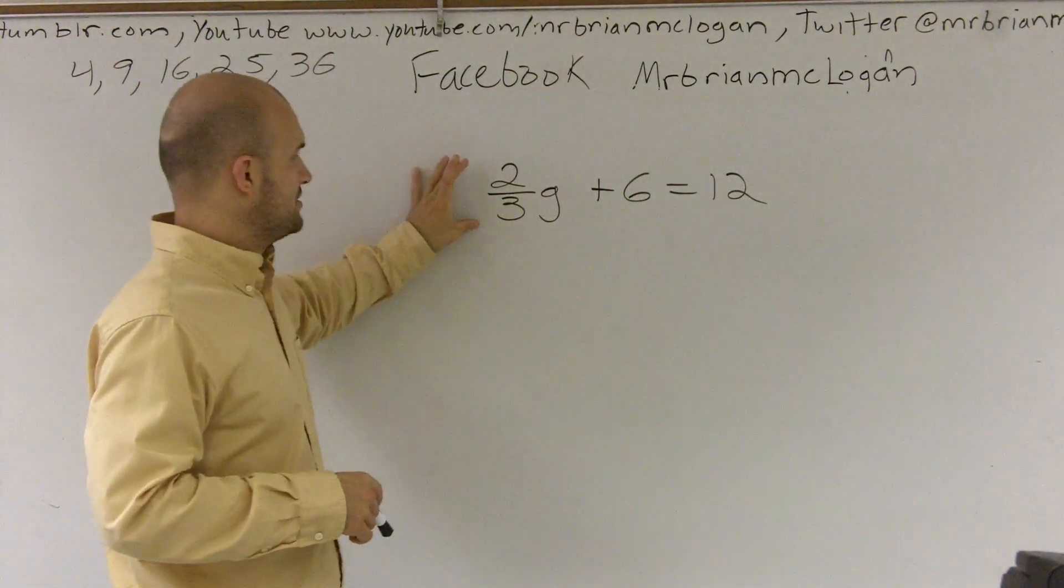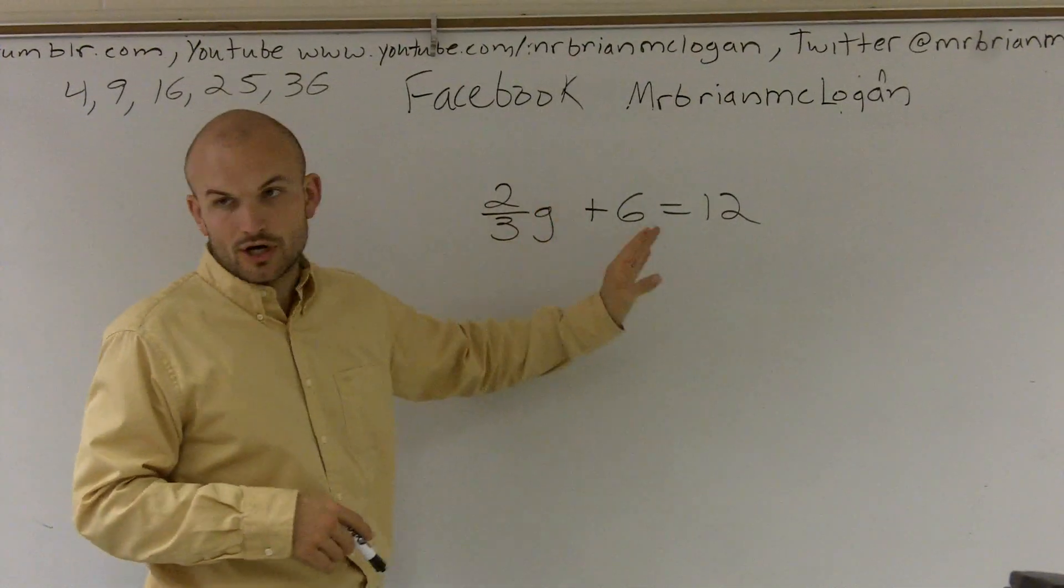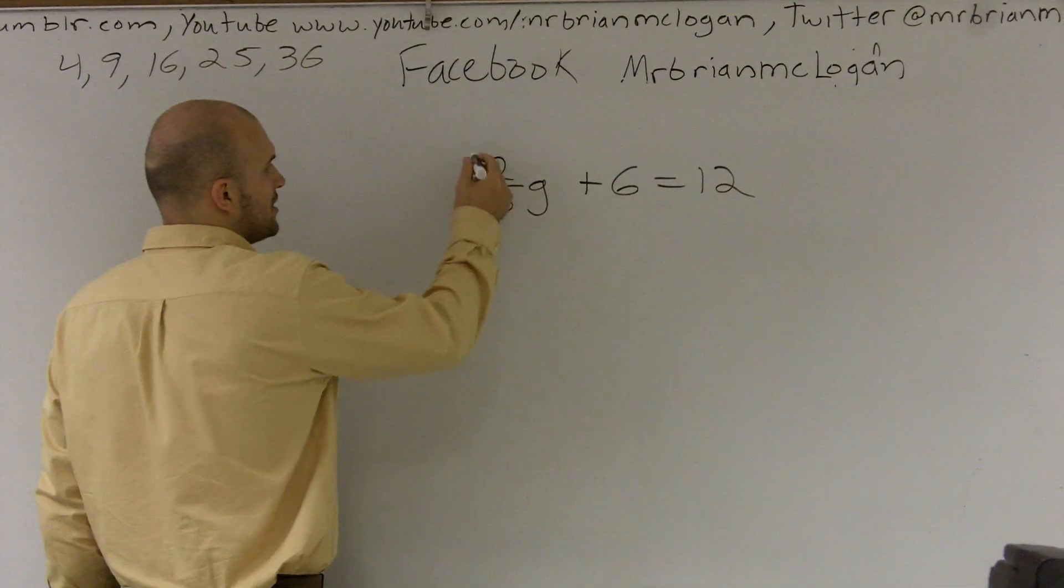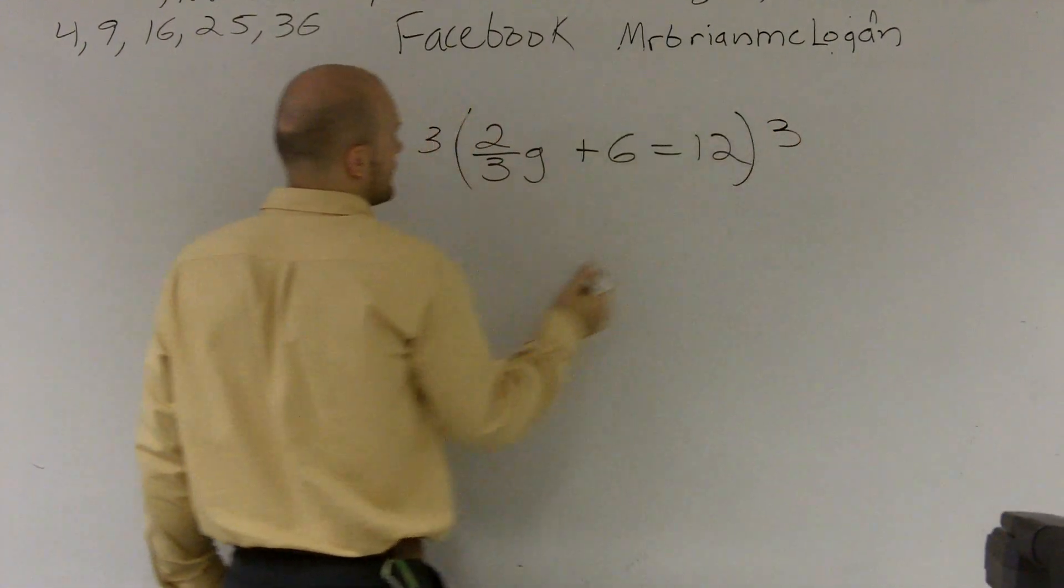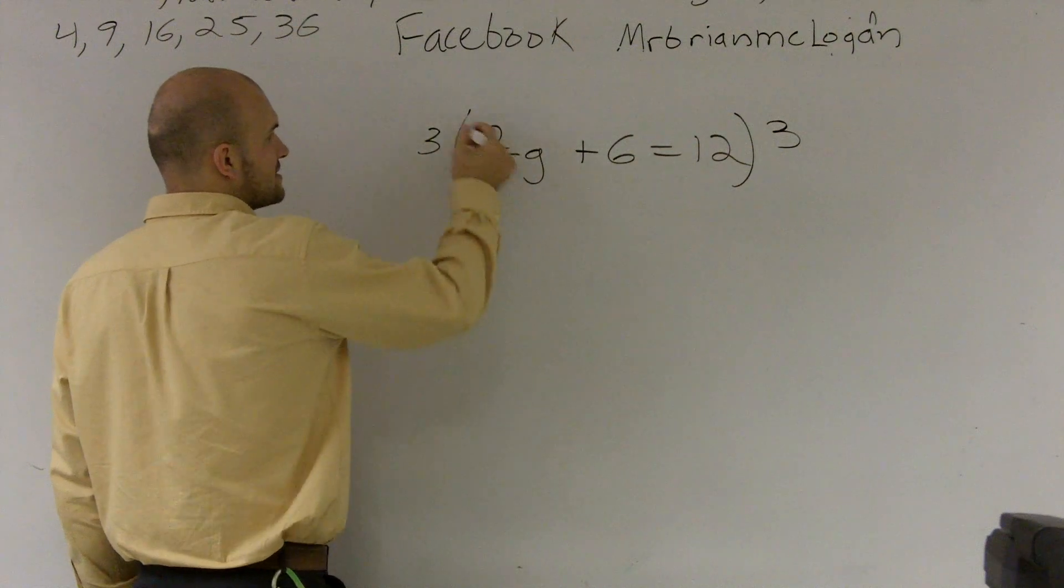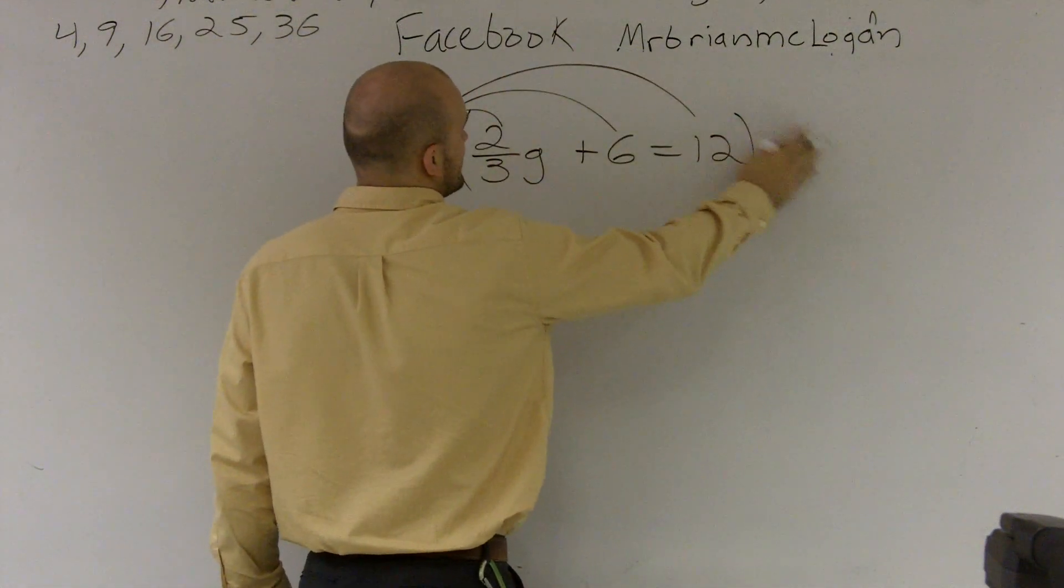Whenever I have a fraction, I can get rid of that fraction by multiplying every single term by the denominator. So what that means is if I multiply everything by three, I have to multiply this three times everything. I'll just put it in there.